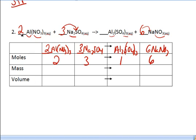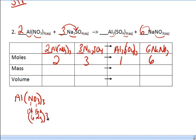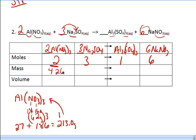Masses — we've got aluminum nitrate. Figure out what one aluminum nitrate weighs and then multiply by two afterwards. For nitrate itself: nitrogen is 14, oxygen is 16 times 3, so one nitrate is 62 grams. I've got three of them, so 62 times 3 is 186. My aluminum is 27 grams. So 27 plus 186 equals 213 — that's the mass of one. But I've got two of them, so I double that and get 426.0 grams.